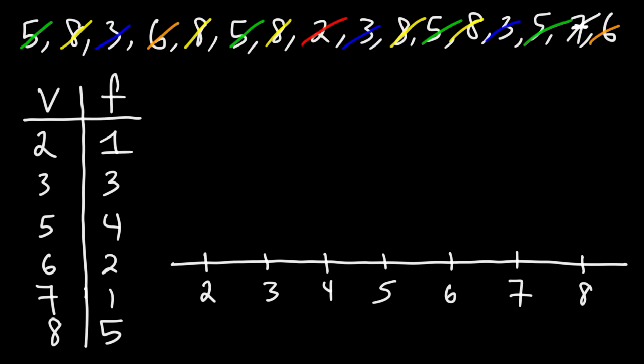Now, we're going to place a dot above each number that we have. The number of dots will correspond to the frequency that we see here. So we have 1 two, so let's put 1 dot above 2. And we have 3 threes, so we're going to put 3 dots above the number 3.